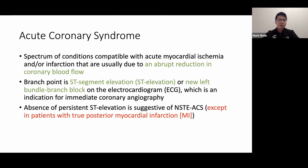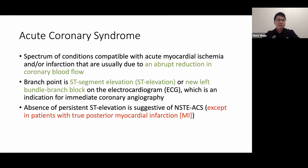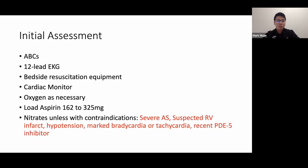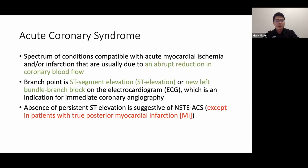The definition of acute coronary syndrome is an abrupt reduction in coronary blood flow. The branch point to differentiate NSTE-ACS from STEMI is ST elevation or presence of a new left bundle branch block, which is an indication for immediate cath. In the absence of persistent ST elevation, NSTE-ACS is suggested, except in patients with a true posterior myocardial infarction, where it can be electrocardiographically silent.